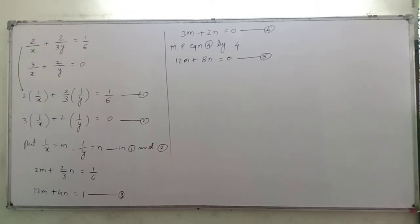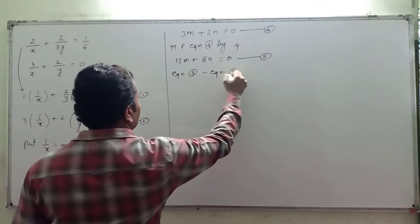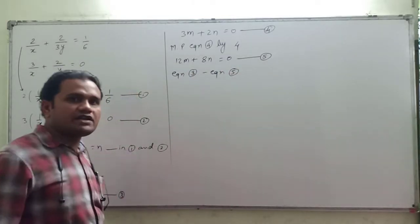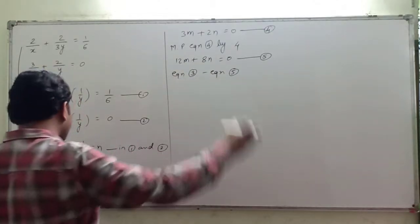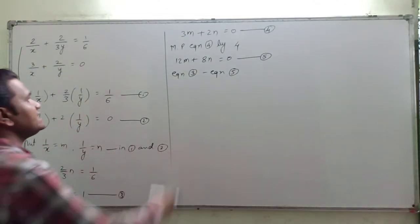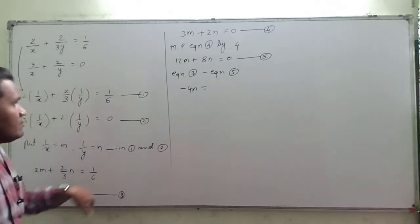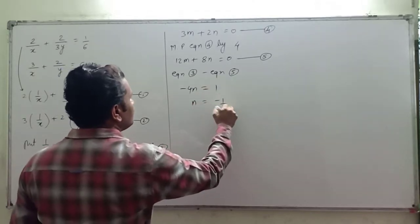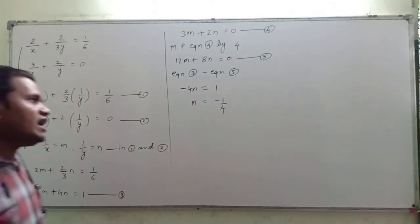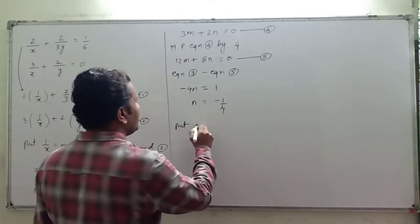Now we will do equation 3 minus equation 5. So 12m - 12m cancels, 4n - 8n = -4n, and 1 - 0 = 1. So -4n = 1, which gives n = -1/4.